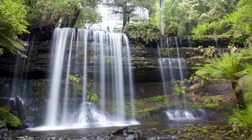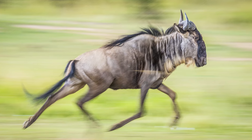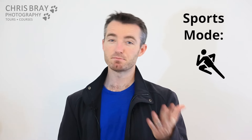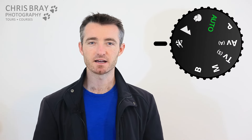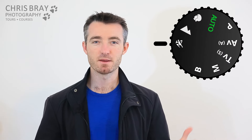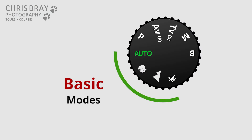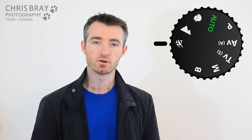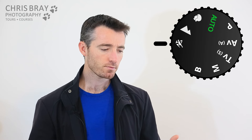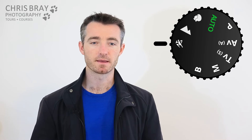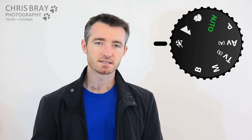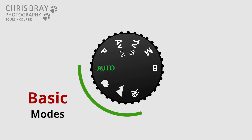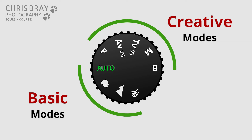Slow shutter speeds show movement blur - anything moving becomes streaked across your image, creating really beautiful effects. Sports mode tries to give you a fast shutter speed so you don't get blurry people running around, but the problem with these basic modes is that you can't change anything yourself. You can't adjust exposure compensation or use a different autofocus point. They're incredibly limiting - you may as well be in aperture or shutter speed mode on the creative side.